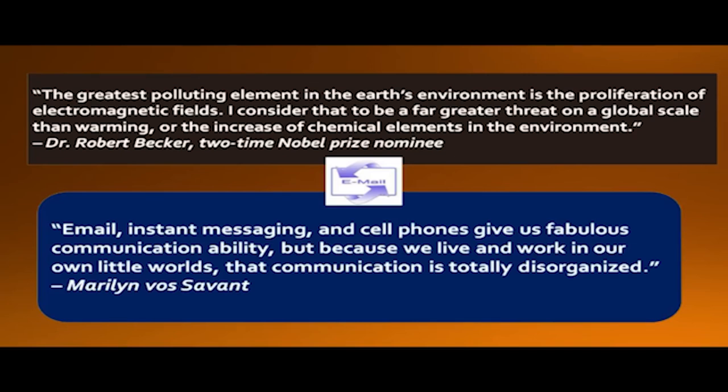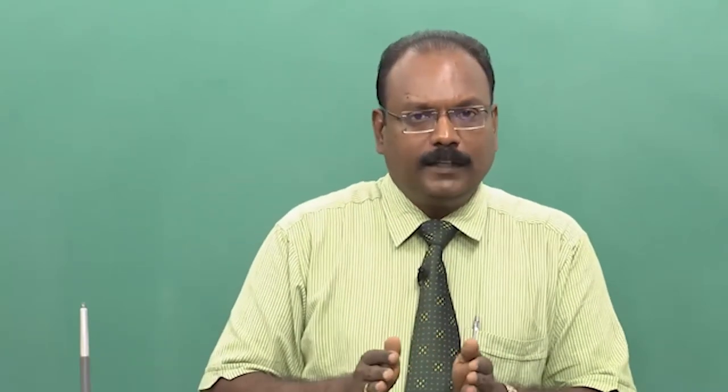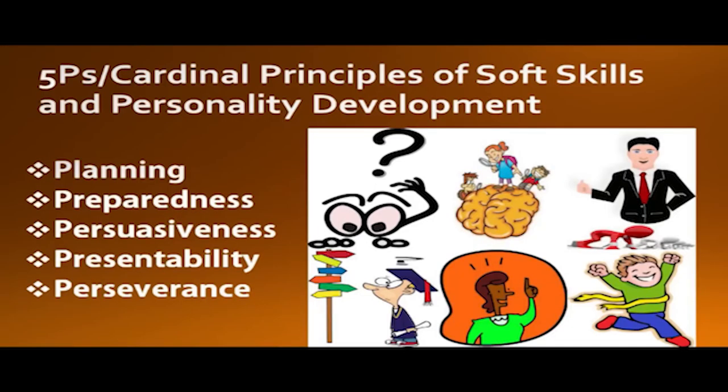Mobile use is proliferating electromagnetic fields, which are causing all kinds of harm to human beings — cancer and other diseases. In the case of small birds like sparrows, they just die or are not able to pass through these fields. Electromagnetic fields are affecting the path of honey bees. The Nobel Prize nominee believes this is worse than global warming because that happens gradually, but this is imminent. The other quote, from Marilyn O. Sawant, says: 'Email, instant messaging, and cell phones give us fabulous communication ability, but because we live and work in our own little worlds, that communication is totally disorganized.' We invented these tools to organize communication, but unfortunately they have made ourselves disorganized too.